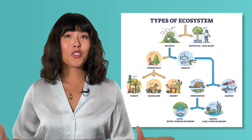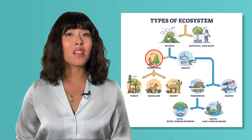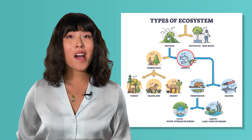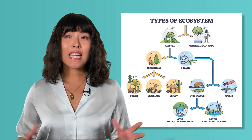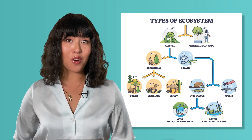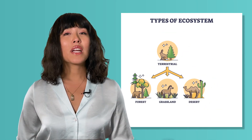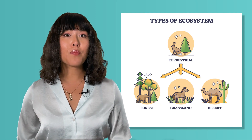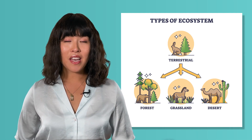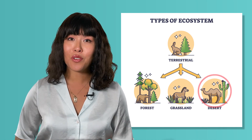There are two main categories of ecosystems: terrestrial, or land-based ecosystems, and aquatic ecosystems. Within each of these categories are several subcategories as well. Terrestrial ecosystems are usually broken into three main subcategories: forest, grasslands, and desert ecosystems.